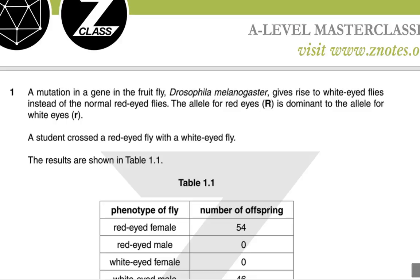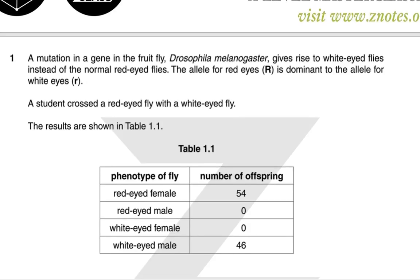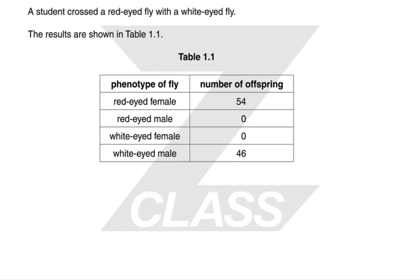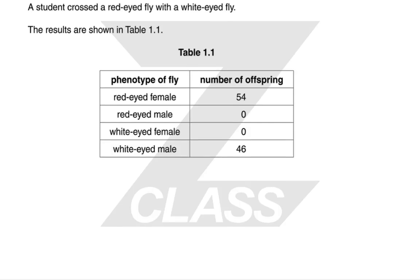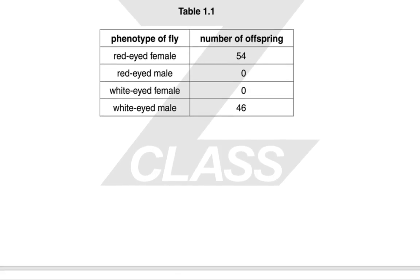A mutation in a gene in the fruit fly Drosophila melanogaster gives rise to white-eyed flies instead of the normal red-eyed flies. The allele for red eyes, R, is dominant to the allele for white eyes, small r. A student crossed a red-eyed fly with a white-eyed fly. The results show 54 red-eyed females, 46 white-eyed males, and no red-eyed males or white-eyed females.